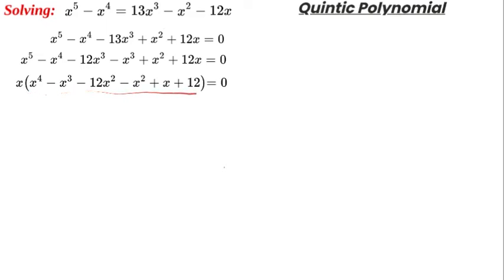We're going to rearrange terms in a specific order. We have x times (x^4 - x^2, then x^3 + x, and again -x^2 + 12).